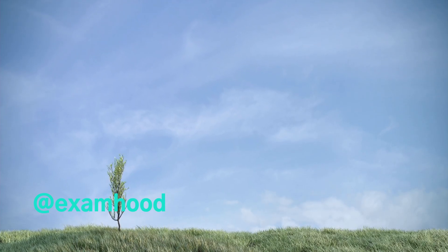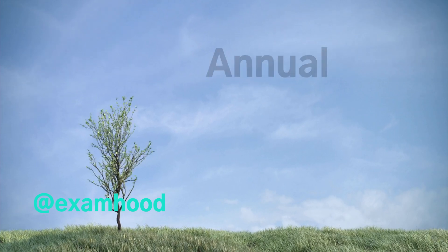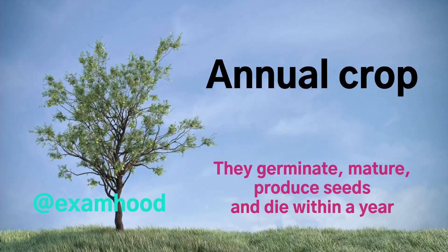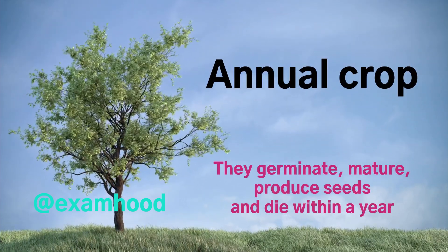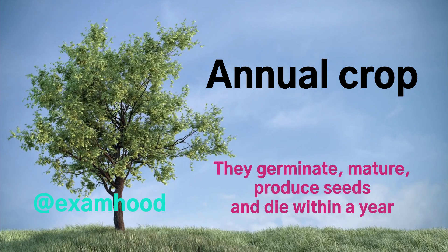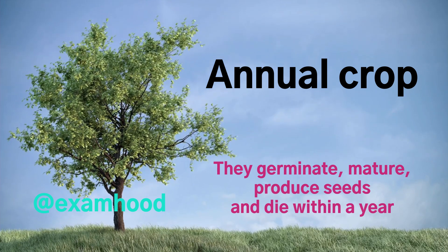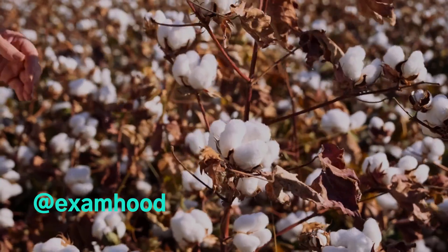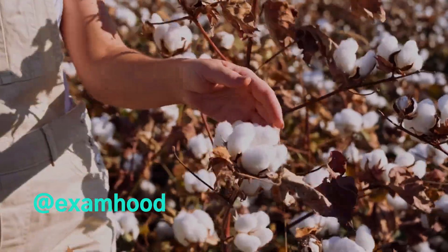Annual crops are crops that grow and complete their life cycle within one year. They germinate, mature, flower, produce seeds and die within one year. Examples of annual crops are cotton.